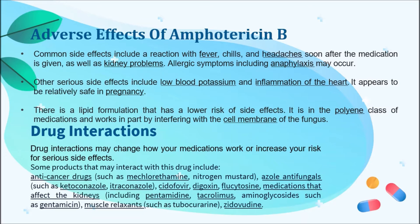Adverse effects of Amphotericin B: common side effects include a reaction with fever, chills, and headaches soon after the medication is given, as well as kidney problems. Allergic symptoms including anaphylaxis may occur. Other serious side effects include low blood potassium and inflammation of the heart. It appears to be relatively safe in pregnancy. There is a liquid formulation that has a lower risk of side effects. It is in the polyene class of medication and works in part by interfering with the cell membranes of the fungus.